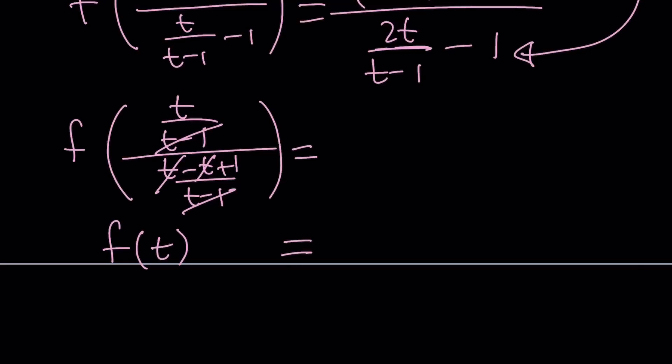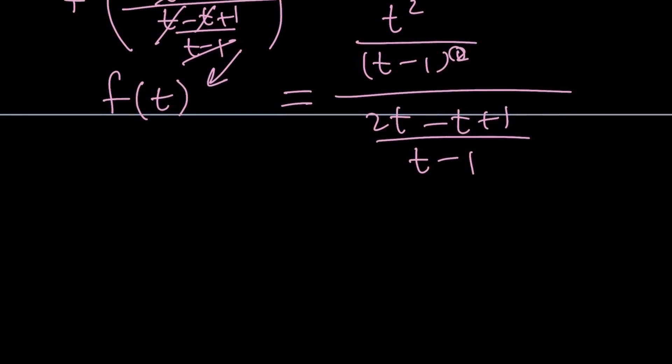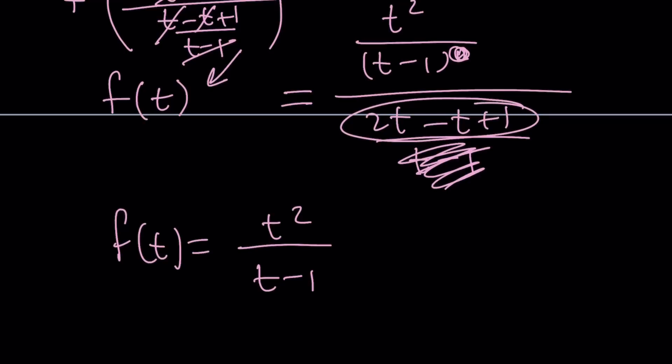And, f of t gives us what? Let's see what happens. If we simplify this, t squared over t minus 1 squared. And, at the bottom, we get 2t minus t plus 1 divided by t minus 1. Obviously, this and that is going to cancel out. And, we're going to get the following. f of t equals t squared over t minus 1. And, this obviously gives us t plus 1.